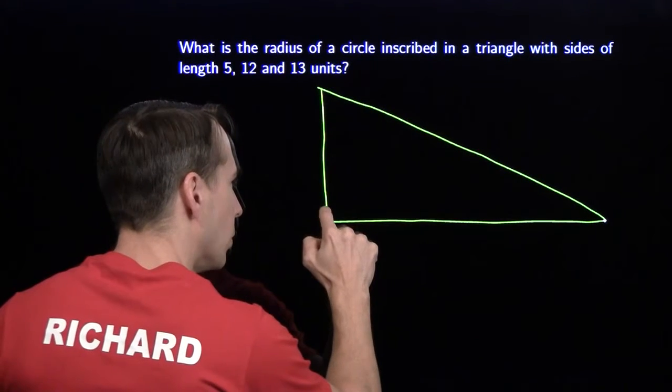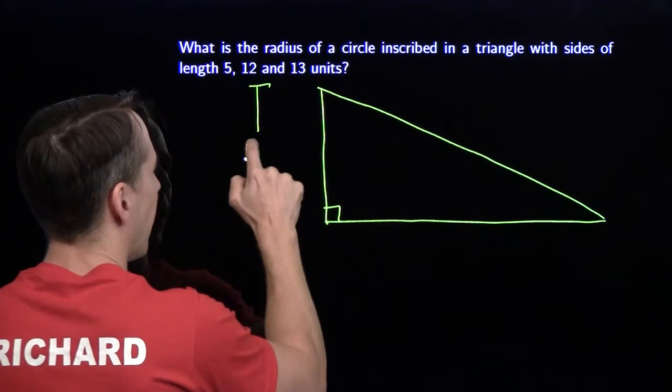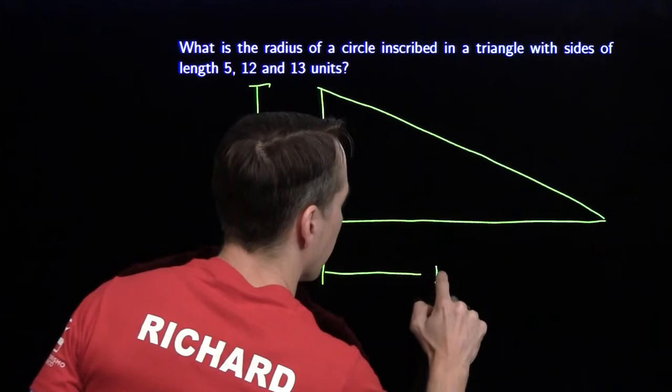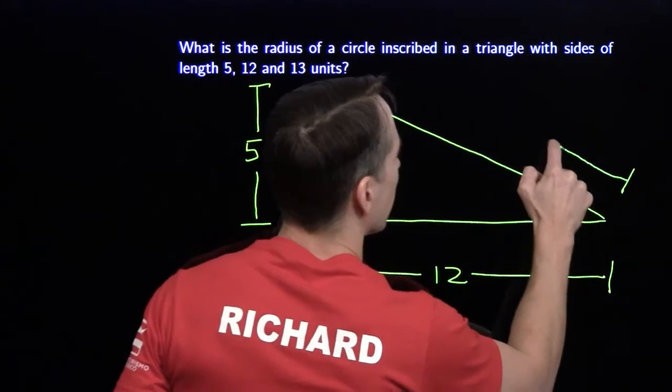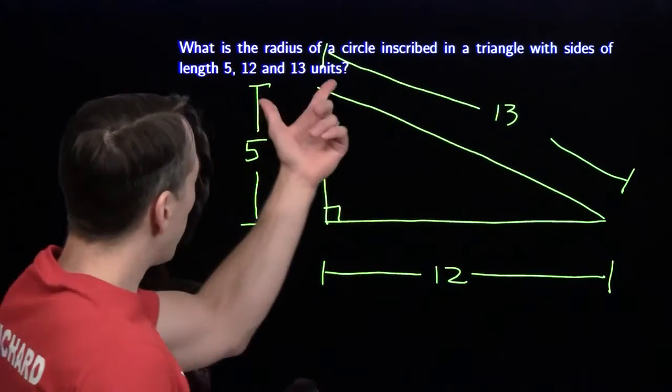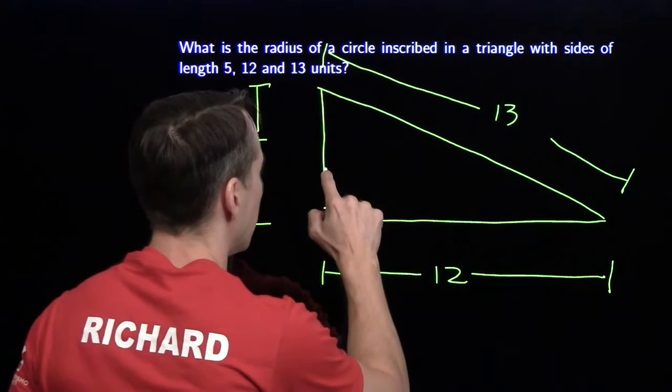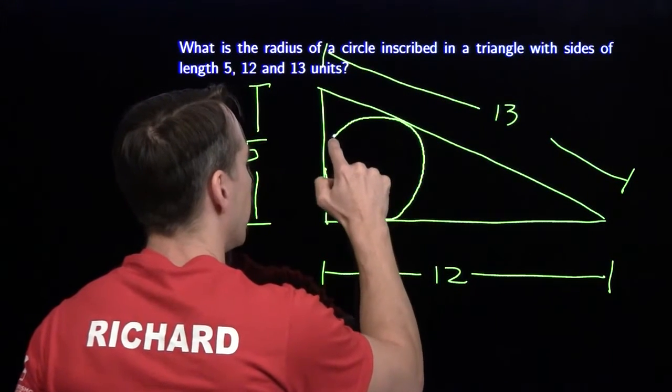Right triangle, very important to label that right angle. And we know that one of the legs has length 5. One of the legs has length 12. And the hypotenuse over here has length 13. And well, we're looking for the radius of the circle inscribed in a triangle, so we need to add that circle in here. So there's our circle.